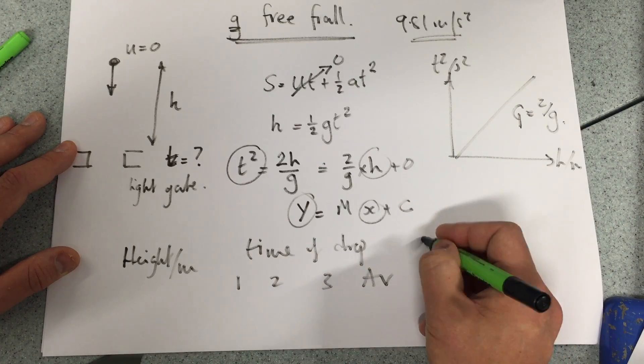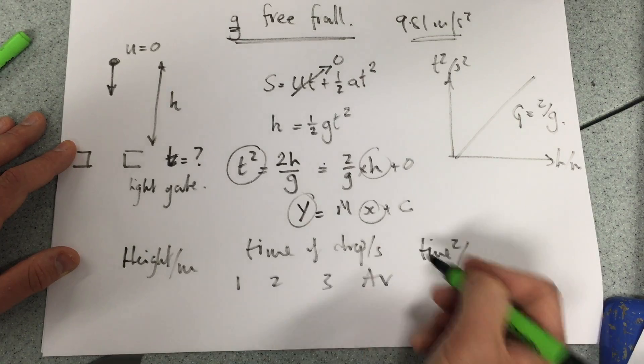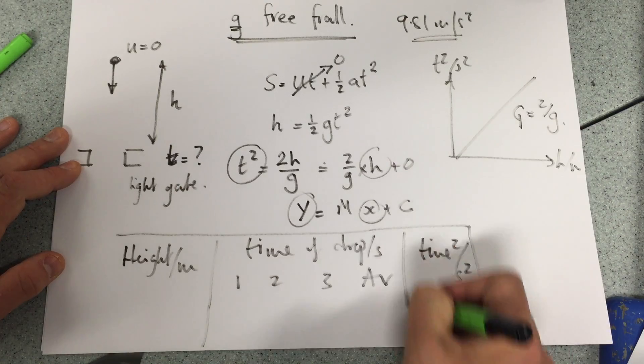three times in average. And then time squared in seconds squared. And that will be our table of results.